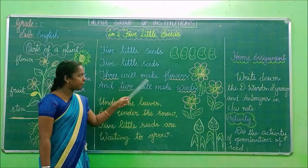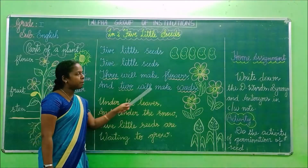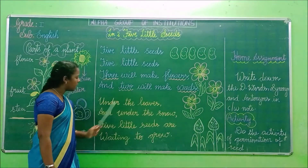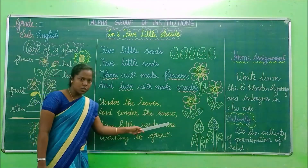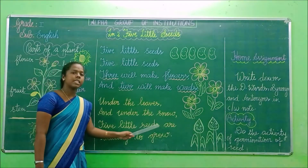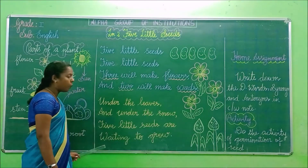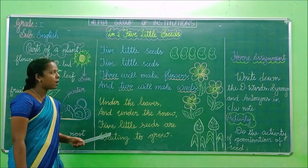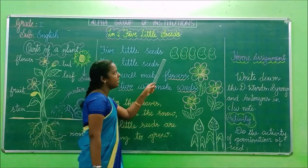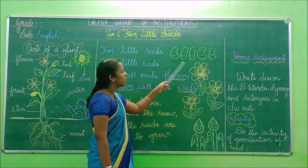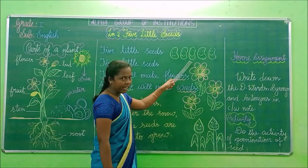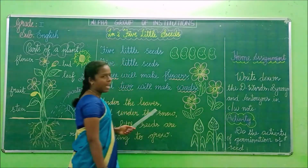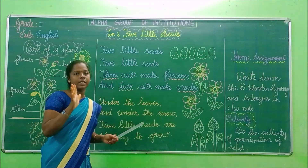So there are how many seeds in this picture? Shall we count? You see here: one, two, three, four, and five.